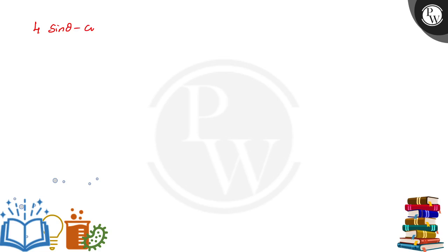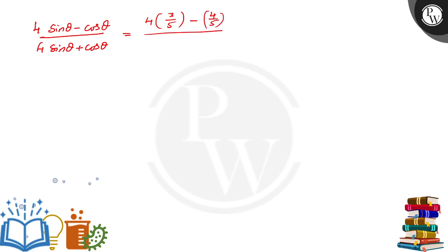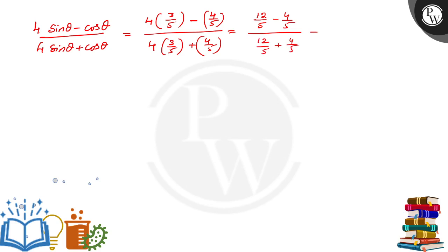Now substitute into the expression: (4 sin θ − cos θ) / (4 sin θ + cos θ) = (4 × 3/5 − 4/5) / (4 × 3/5 + 4/5) = (12/5 − 4/5) / (12/5 + 4/5). The common denominator is 5, so the numerator is 12 − 4 = 8, giving 8/5, and the denominator is 12 + 4 = 16, giving 16/5.